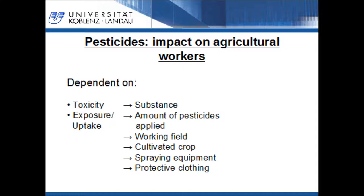Also, the type of the cultivated crop determines the exposition to pesticides. For example, the drift of pesticides — the amount which doesn't reach the crop and stays in the air — is higher in the cultivation of tree crops than in the cultivation of non-tree crops. Besides these factors, the type of spraying equipment used and the type of protective clothing also determine the pesticide concentration people are exposed to, and thus the uptaken pesticide amount.